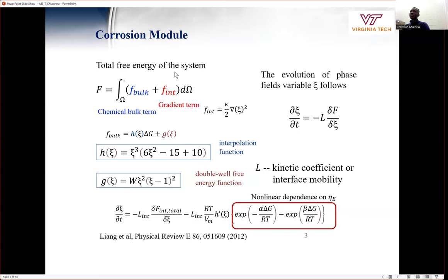So this equation for the corrosion model, that is the total free energy of the system. And the evolution of the phase-field variable we define with this equation. L is the interface mobility, and this equation is the Allen-Cahn equation with nonlinear dependence on overpotential.